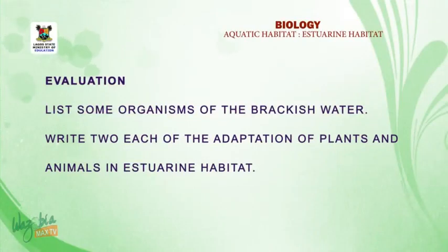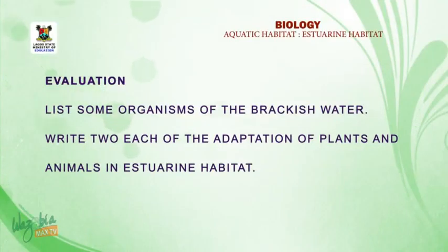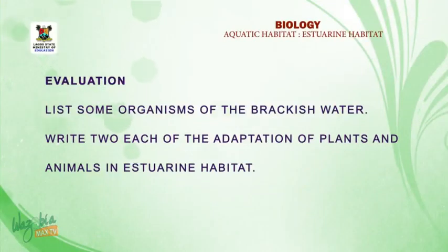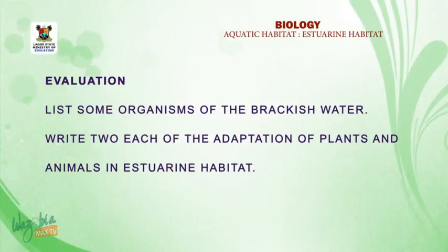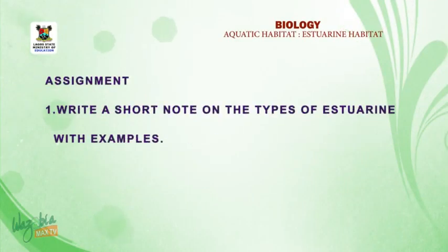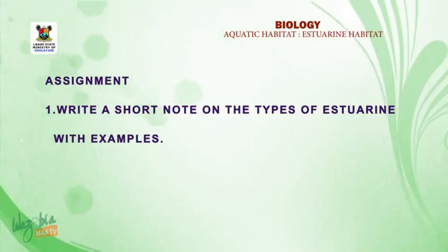Let's evaluate ourselves before we round up. I want you to list some organisms of brackish water — both plants and animals found in the brackish water or estuarine habitat. Then write out the adaptations of plants and animals in estuarine habitats. Assignment: write a short note on the types of estuary with examples. Thank you.